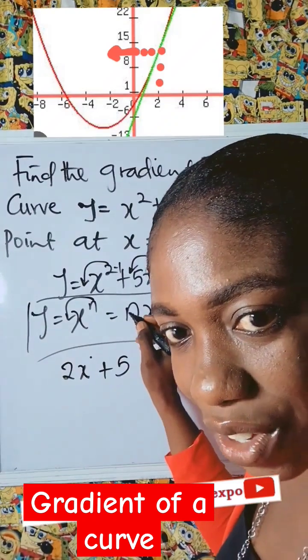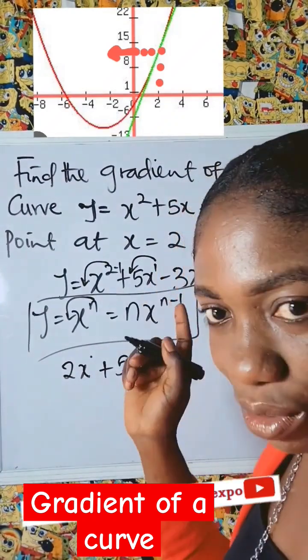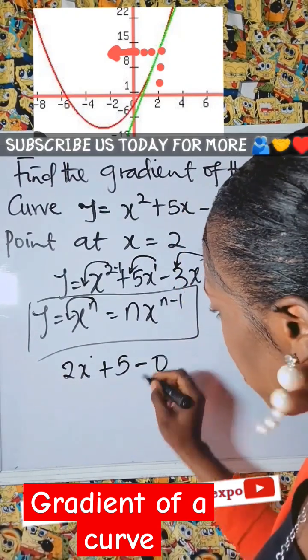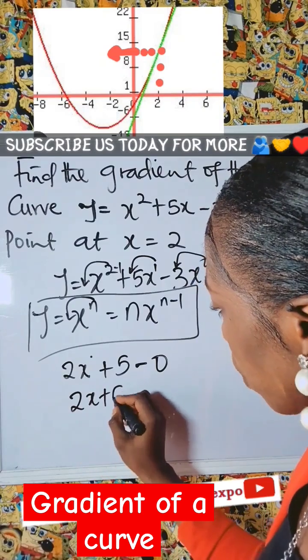We have 5. Subtract 1, it is 0. And x raised to power 0 will give us 1. So this is 5. Then use this to multiply, we have 0. So we have 0 here. This will give us 2x plus 5.